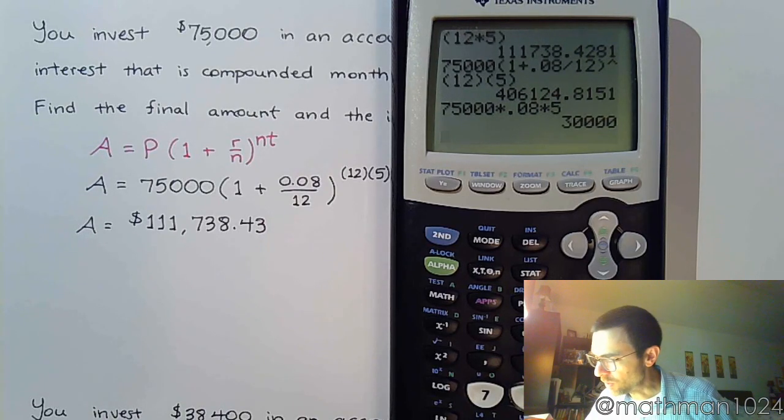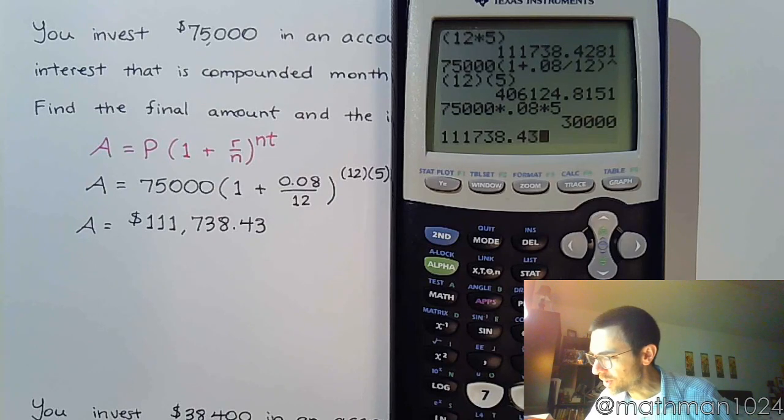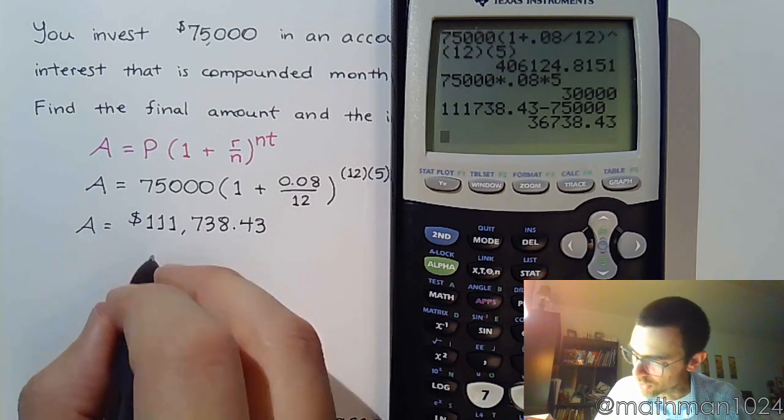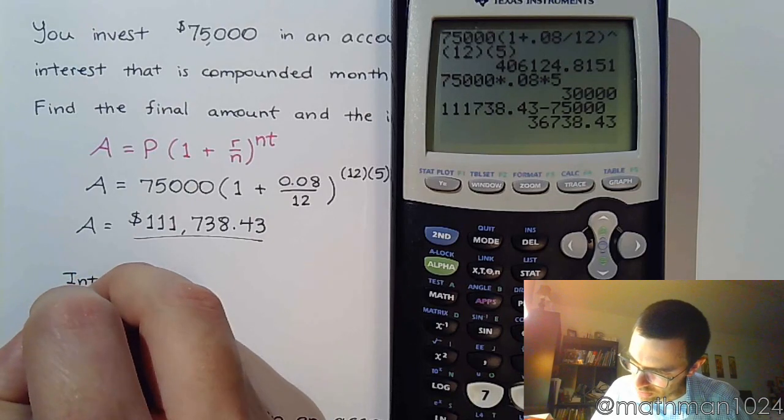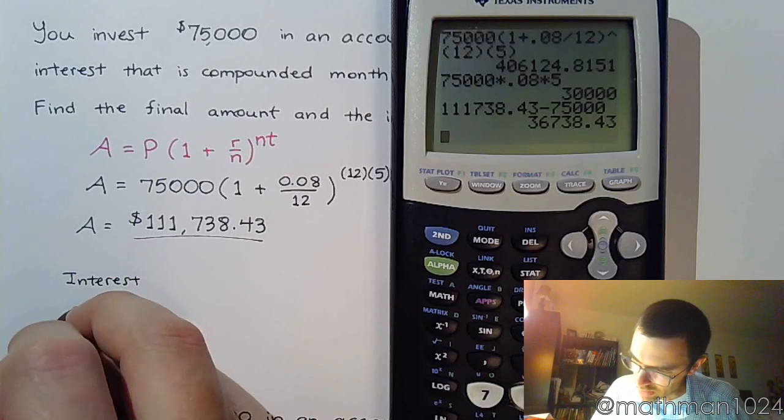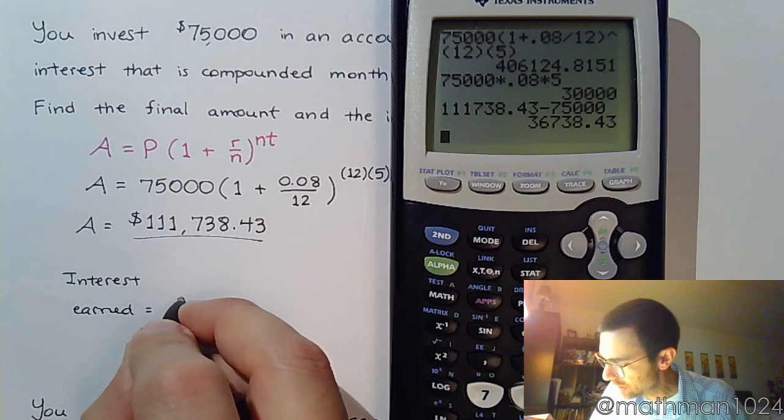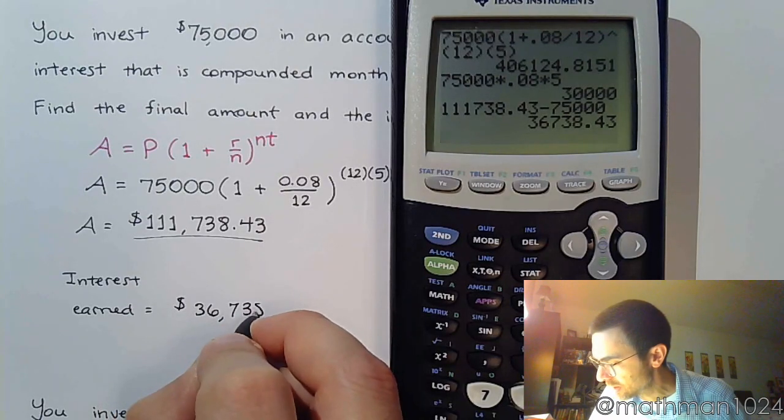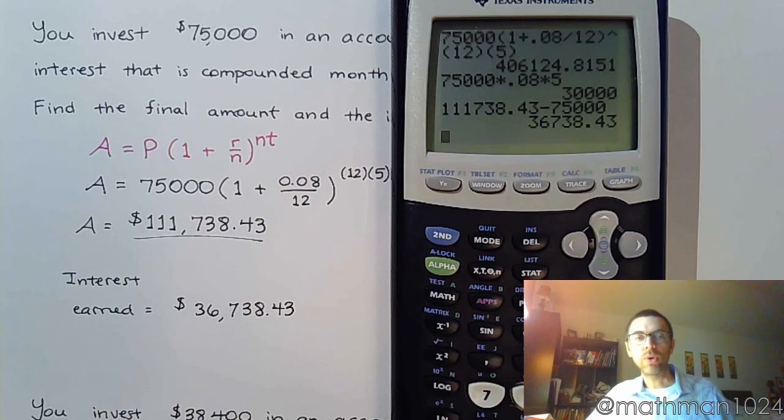All right. Well, we can take our answer, $111,738.43, and subtract off the $75,000 initial investment. So, this is your final value, so that's one answer. And, the interest earned, so the interest earned was $36,738.43.